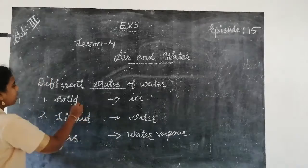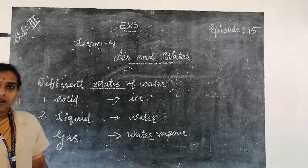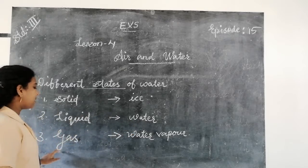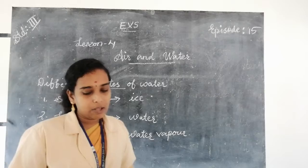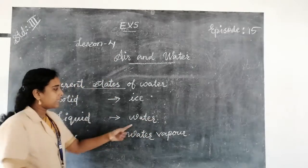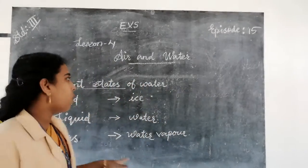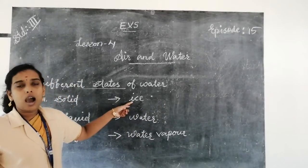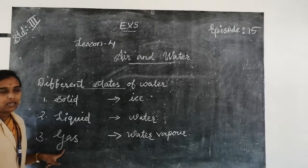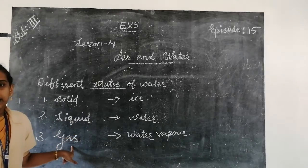Ice, water, and water vapor are the three states of water. Solid state is ice, water is the liquid state, and water vapor is the gaseous state of water. Water exists in three states: solid state that is ice, liquid that is water, and gas that is water vapor. If we keep water in a freezer, it changes into ice. If we boil water, it changes into water vapor. If solid state is heated, it changes into liquid; if liquid is heated, it changes into gaseous state.